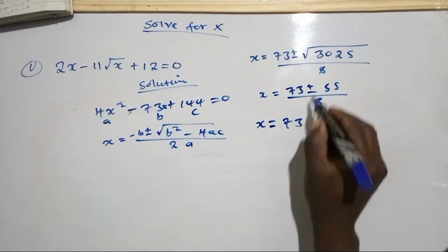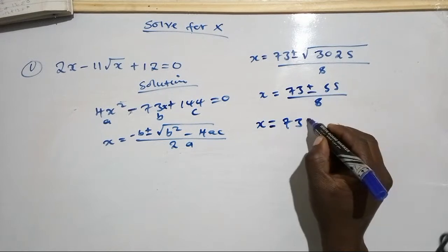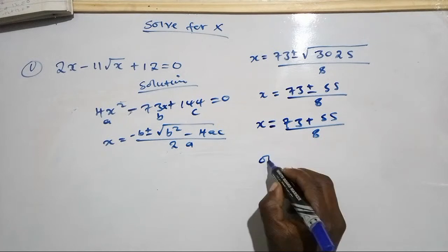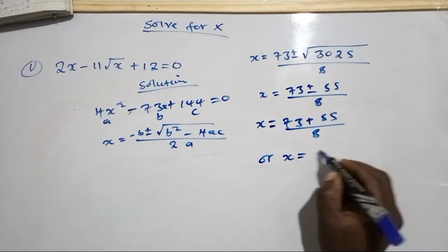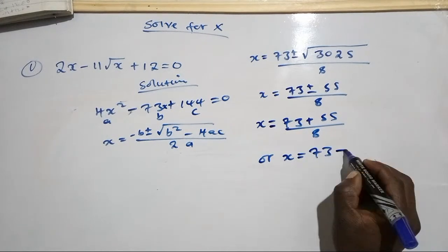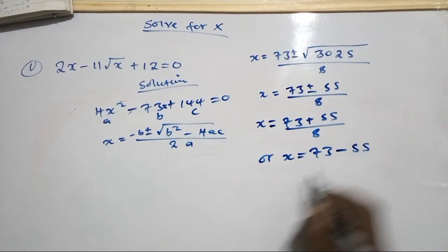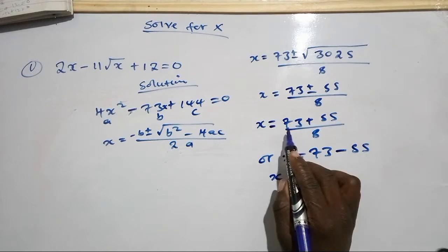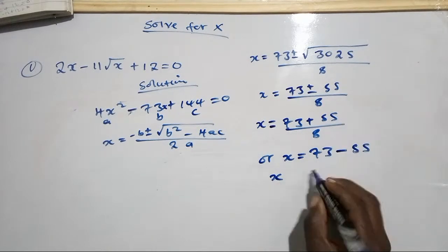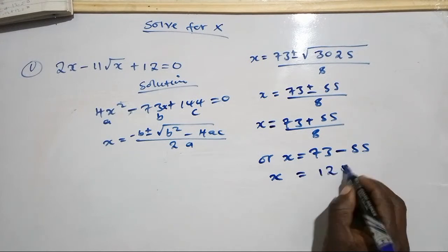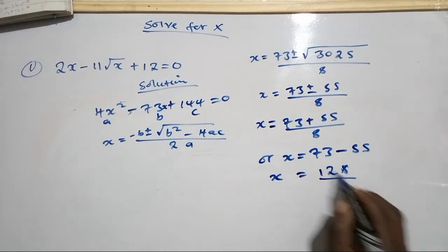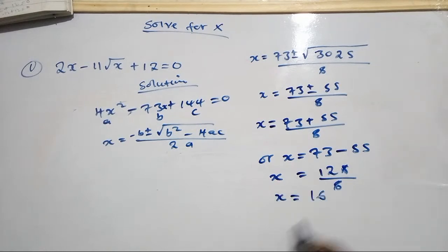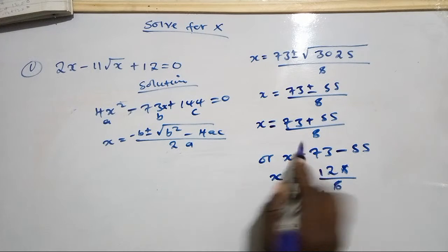Following the plus sign first: x equals 73 plus 55, divided by 8. That gives 73 plus 55 equals 128, divided by 8. The answer is 16. So the first value is x equals 16.